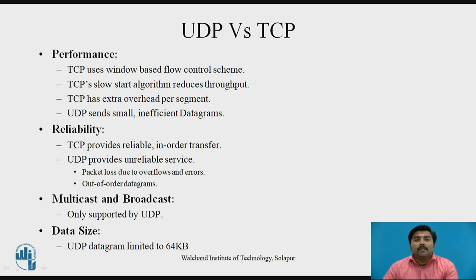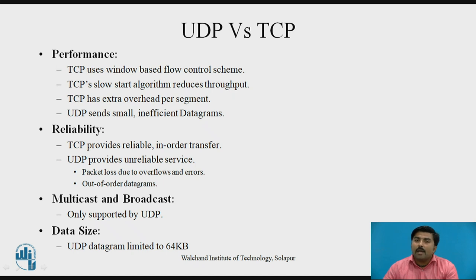Now let's see the UDP and TCP comparison in terms of performance. TCP uses a window-based flow control scheme, whereas UDP does not have any flow control mechanism. TCP's slow-start algorithm reduces throughput, while UDP directly takes data from the IP layer and transfers it to the application with no buffering. TCP has extra overhead per segment — the TCP header has more fields compared to UDP, such as window size, checksum, and flow control — giving it more overhead than UDP.